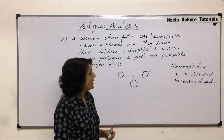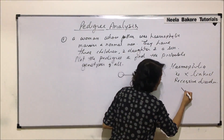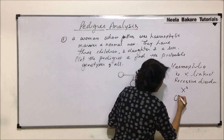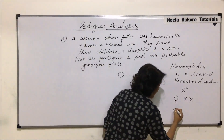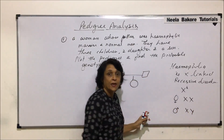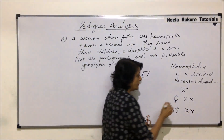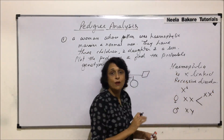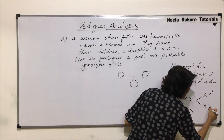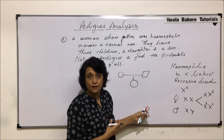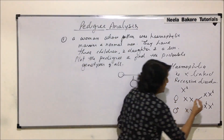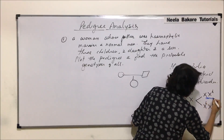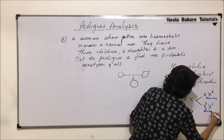For X-linked hemophilia, we denote the recessive allele on the X chromosome as X^h. Since females have two X chromosomes, a female can be a carrier — having one recessive X^h and one dominant X — or she can be diseased if she has two recessive X^h chromosomes.